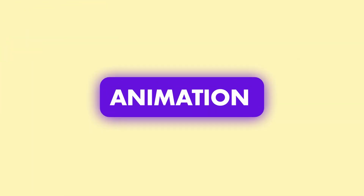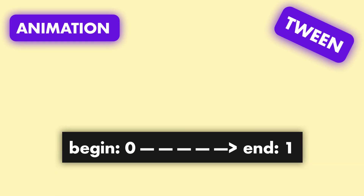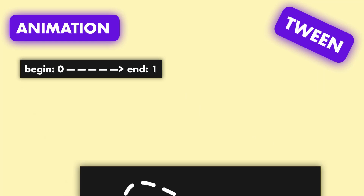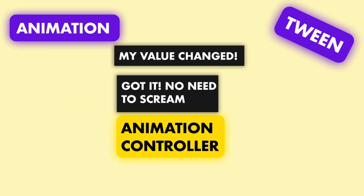The next part is the actual animation or tween. This defines the begin and end values along with how to move from the beginning to the end through a curve. The default curve is linear, which means that for every frame it will increase by the exact same amount that it did for the previous frame. This object will notify the controller through the value-listenable protocol whenever its value has changed.